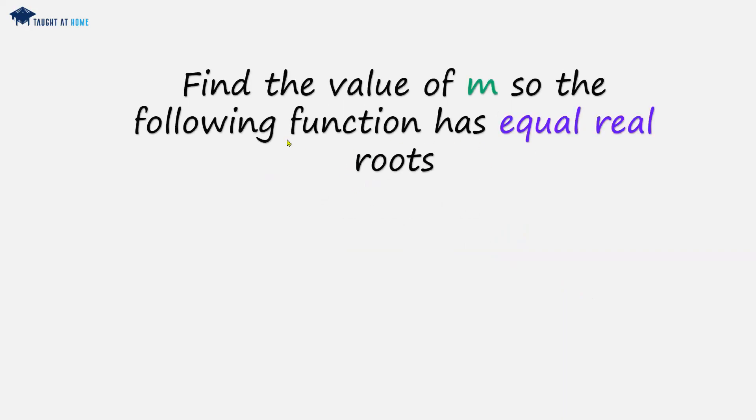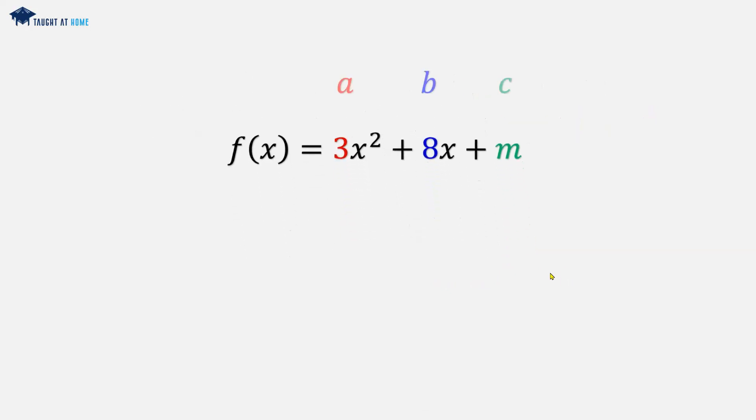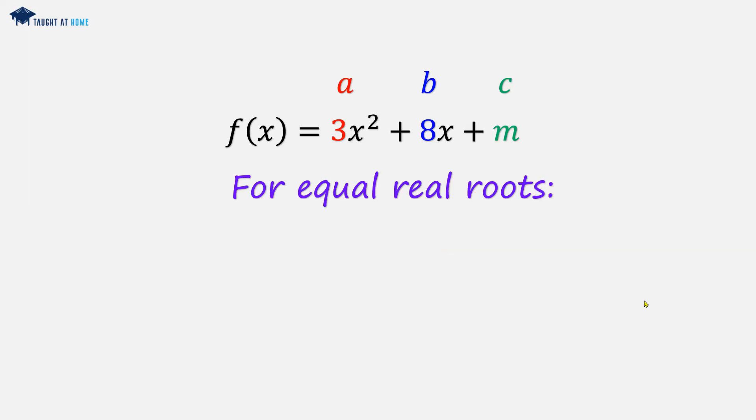Example 2: Find the value of m so the following function has equal real roots. f(x) = 3x² + 8x + m. We'll highlight our a, b, and c values. Now for equal real roots, the condition is that we want b² to equal 4ac.